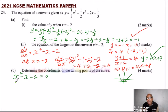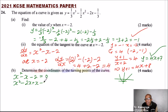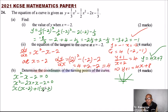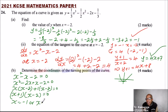We will say x squared minus 2x plus x minus 2 equals 0, and factor by grouping. We factor out x and get x(x minus 2), then factor out 1 to get (x minus 2). So we have (x plus 1)(x minus 2) equals 0. Therefore x equals minus 1, or x equals 2.